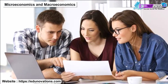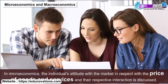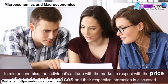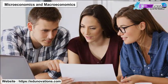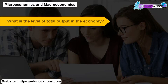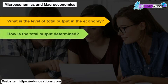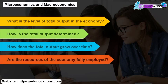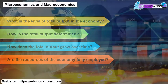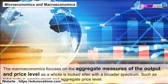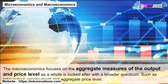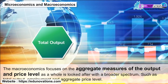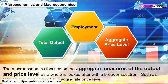Microeconomics and macroeconomics. In microeconomics, the individual's interaction with the market regarding the price of goods and services is discussed — such as the level of total output, how it is determined, how it grows over time, and whether the economy's resources are fully employed. On the other side, macroeconomics focuses on aggregate measures of output and price level as a whole, with a broader spectrum, covering total output, employment, and aggregate price level.